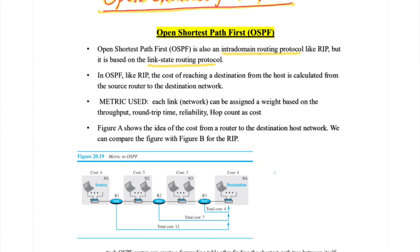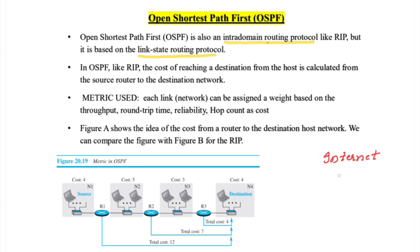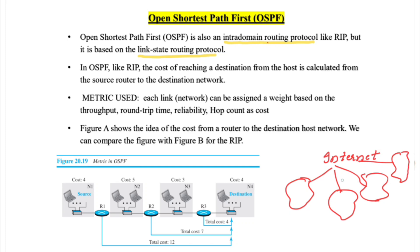Intra-domain means within one autonomous system. The entire internet cannot be managed by a single administration, so it is divided into different systems called autonomous systems: AS1, AS2, AS3, AS4, and so on. Any routing protocol that carries out the routing process within one single autonomous system is called an intra-domain routing protocol.